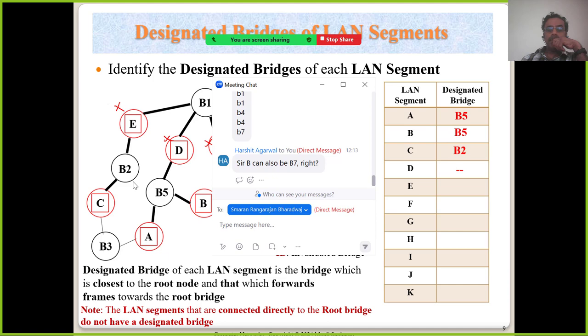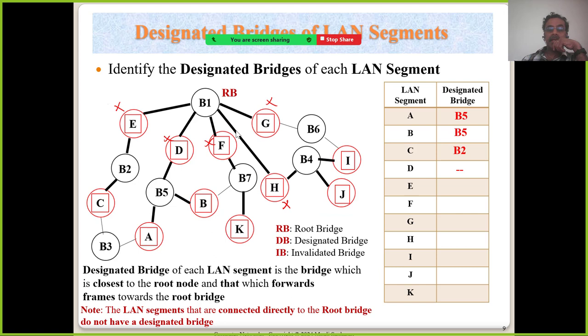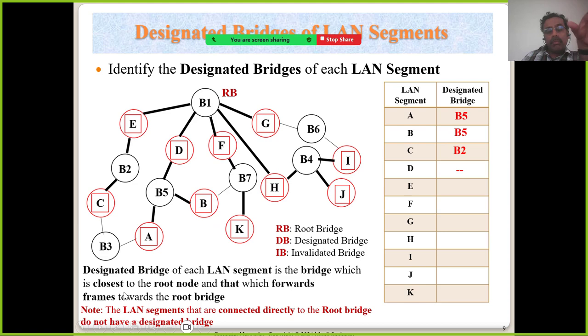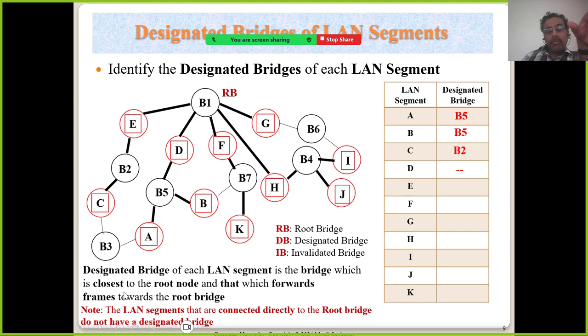For LAN B, the answer is not B7 — after the STP has been formulated, B7's port to B is already dotted, so you would be violating the STP algorithm by choosing it. The designated bridge for B is B5. The designated bridge is always the immediate bridge connected to the LAN that takes traffic upward toward the root bridge.